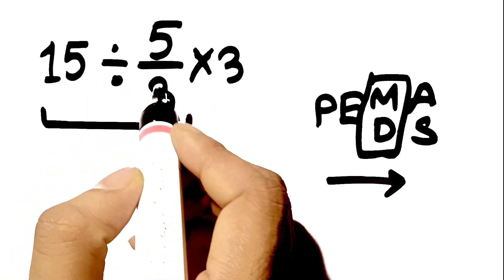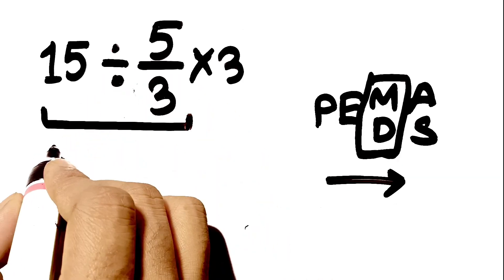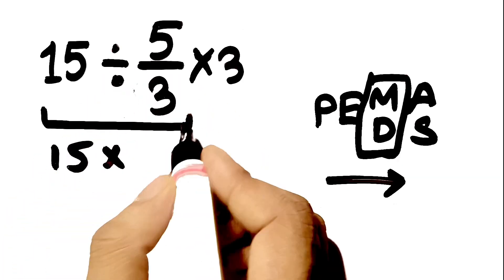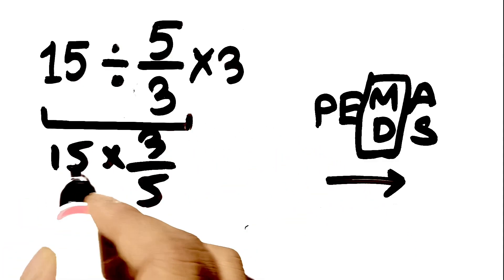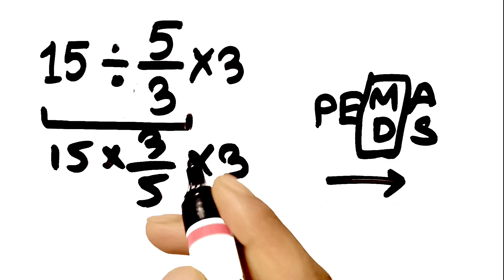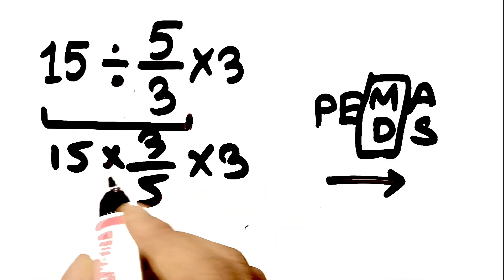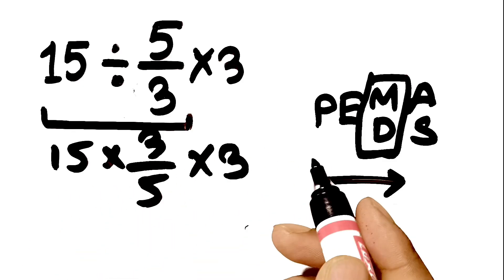So 15 divided by 5 thirds is the same as 15 multiplied by 3 fifths. The expression is now 15 times 3 fifths times 3. Now we only have multiplications, so we have to work from left to right.